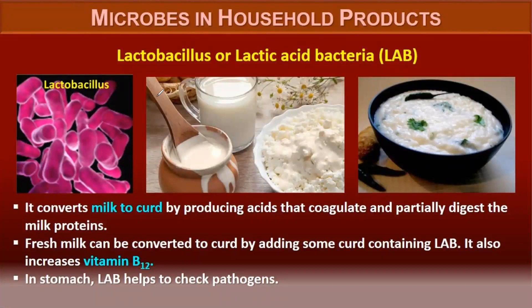Lactobacillus, or lactic acid bacteria, also called LAB, converts milk to curd by producing acids that coagulate and partially digest the milk protein, that is casein. Fresh milk can be converted to curd by adding some curd containing LAB. It also increases vitamin B12 and helps to check pathogens.